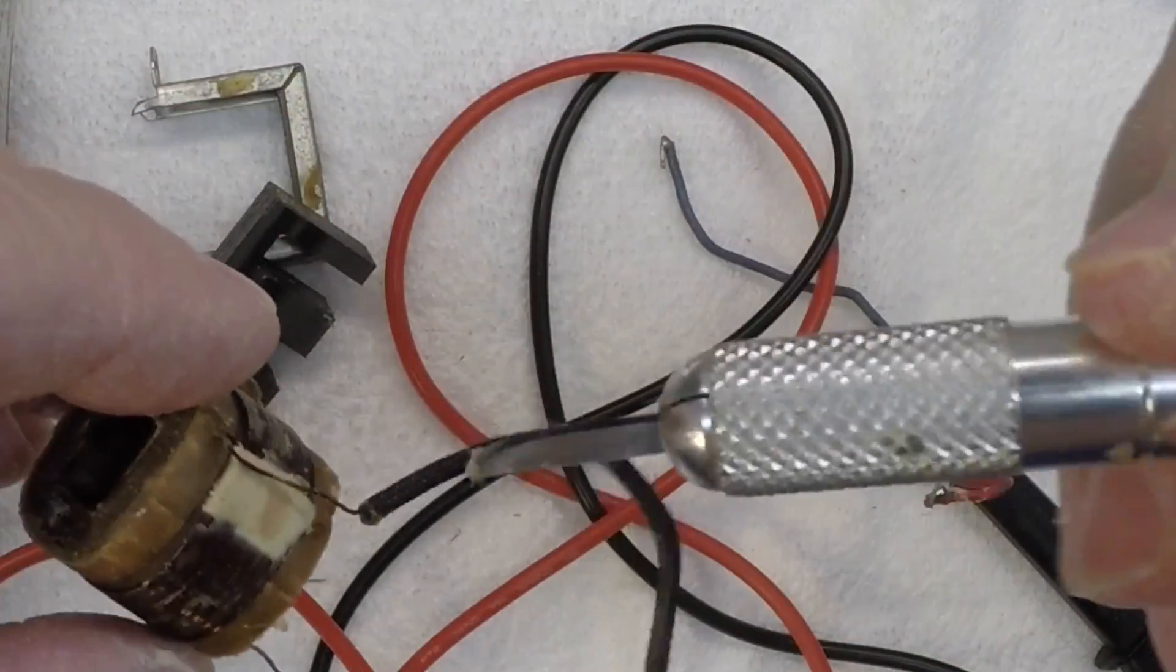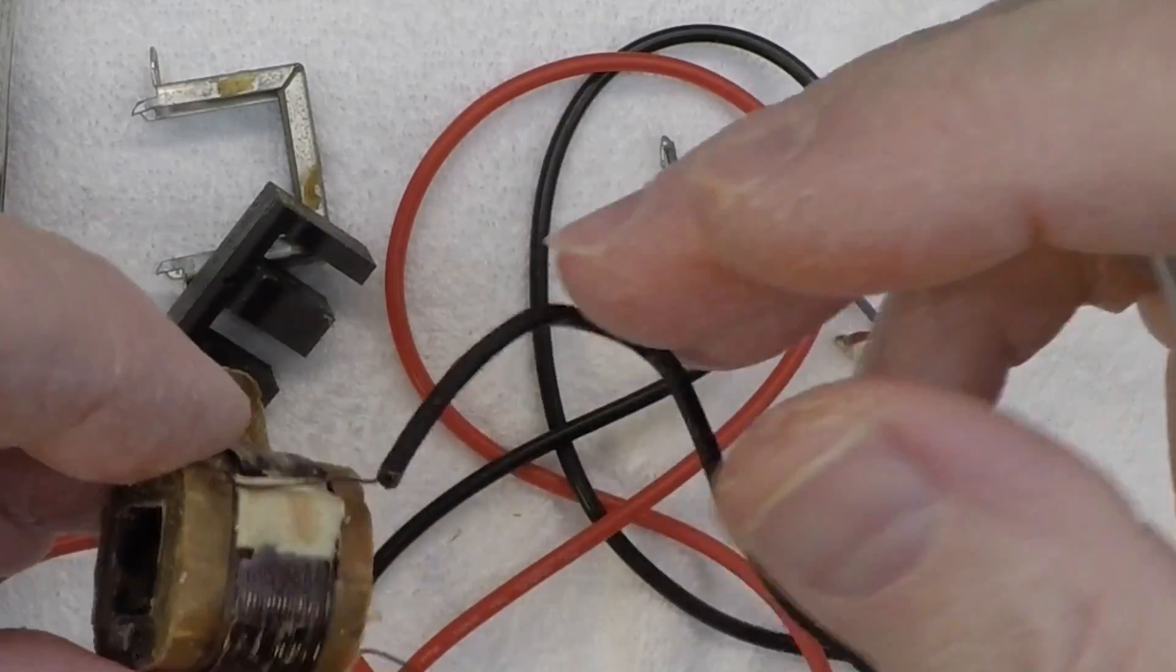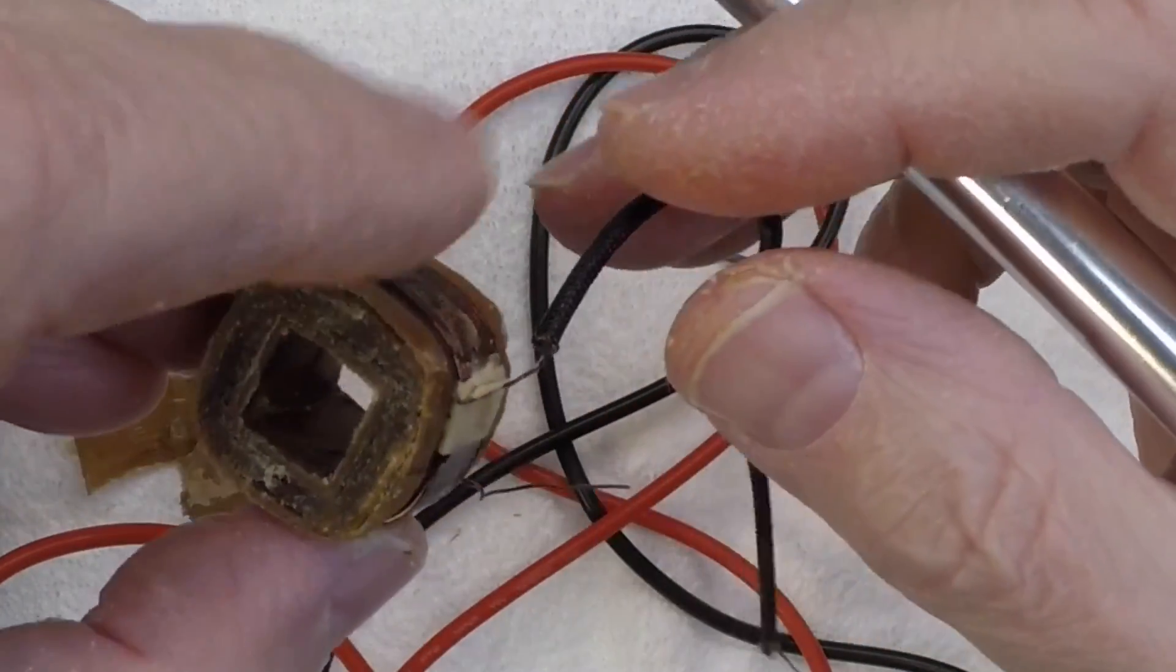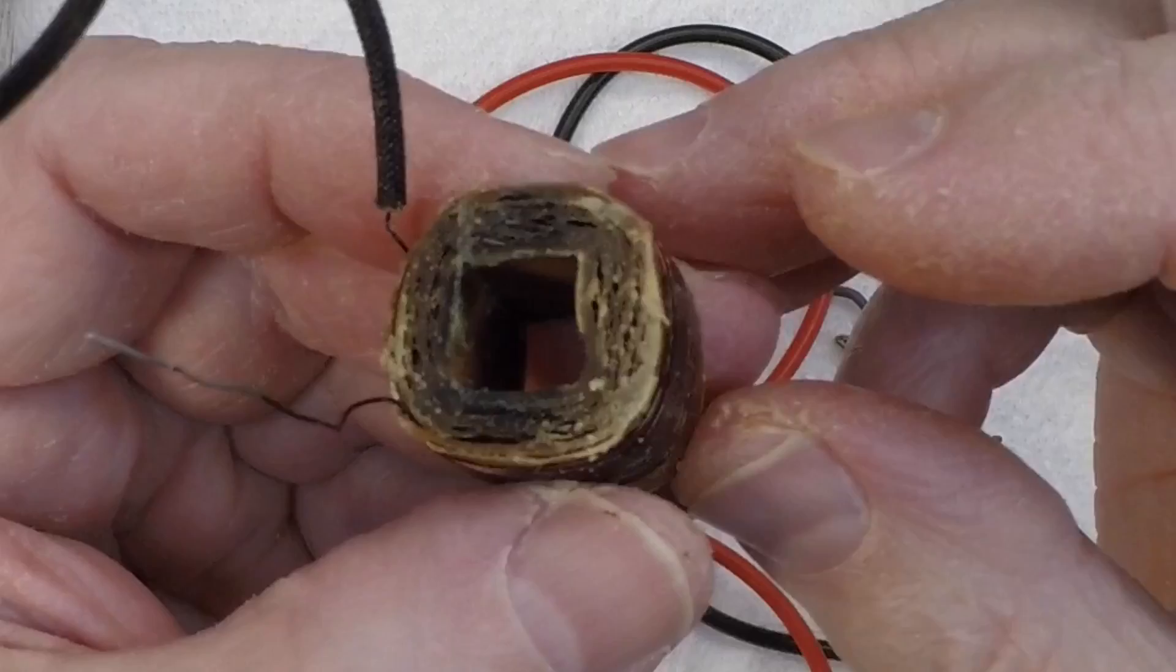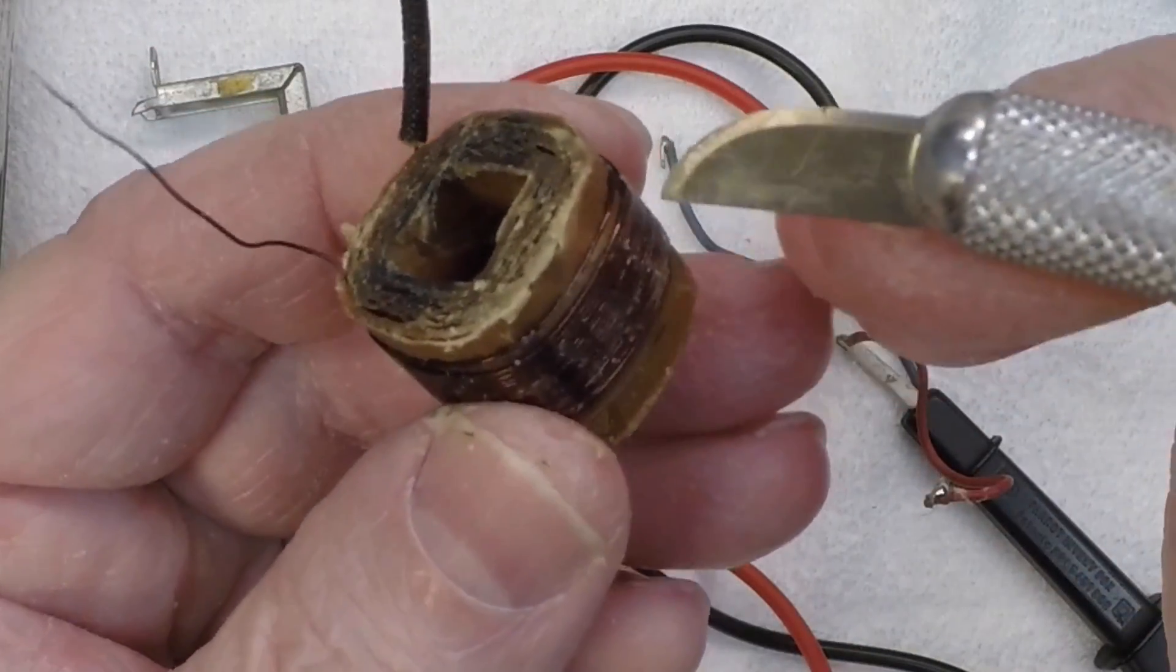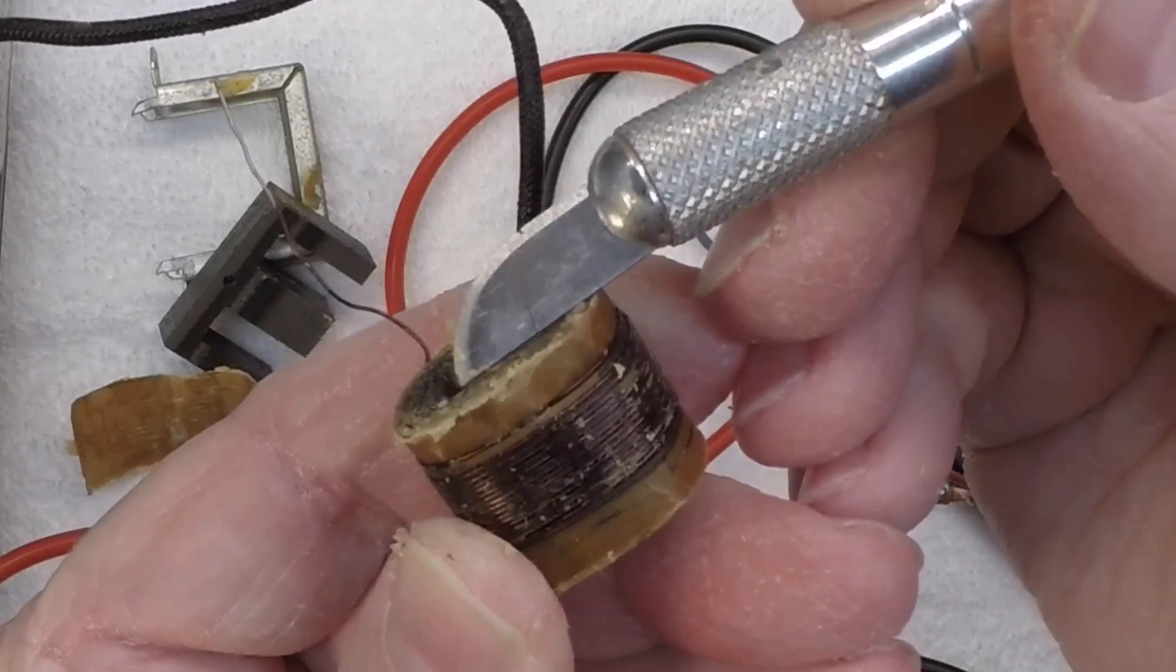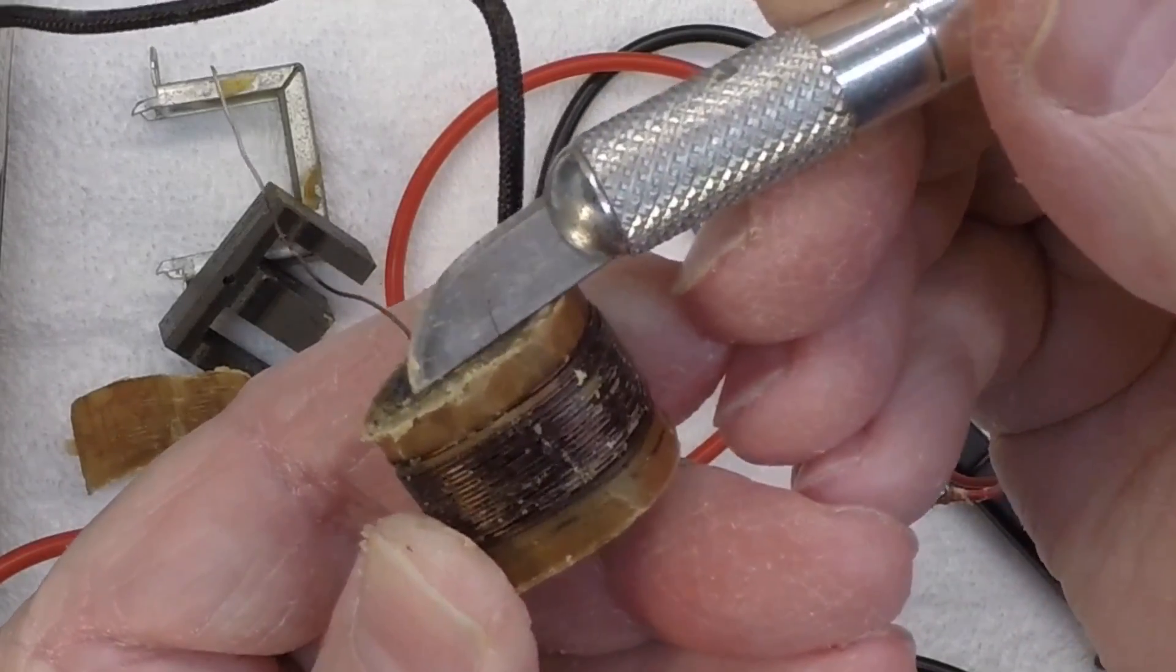All right, you guys can see the secondary leads here are wound on the outside, and the inner core itself would be the primary. I did find one of the primary leads right here. If that's showing up, possibly on camera, you guys can see that.